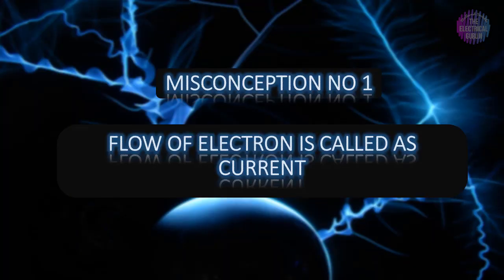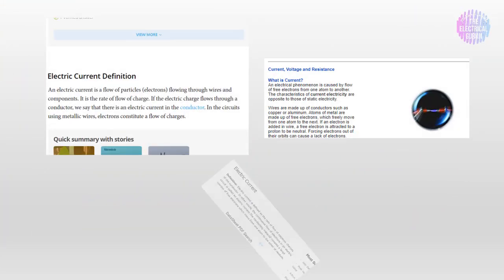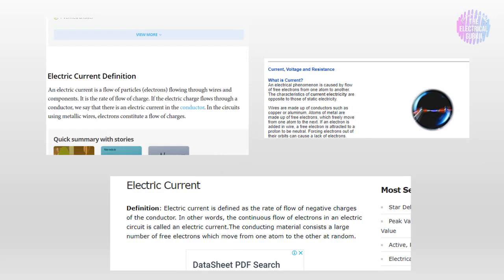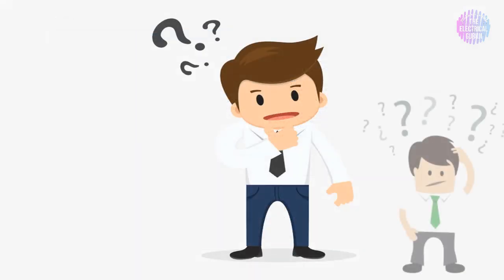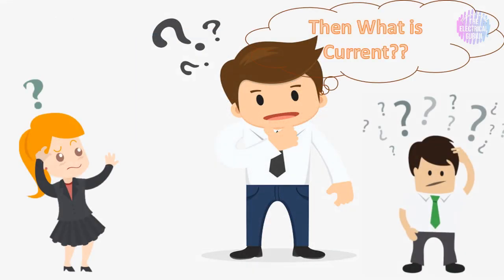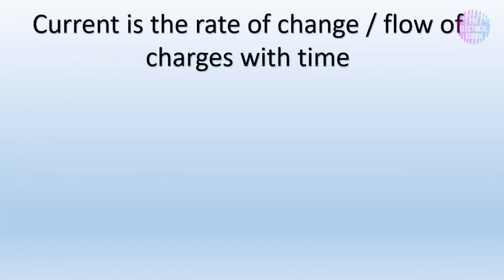Misconception number one: flow of electrons is called current. In some textbooks or educational websites, current is considered as the flow of electrons, and that produces the biggest blunder of all time. That's because the actual definition of current is a little bit confusing to understand. According to the definition, current is the rate of change of charge, or flow of charge with time.